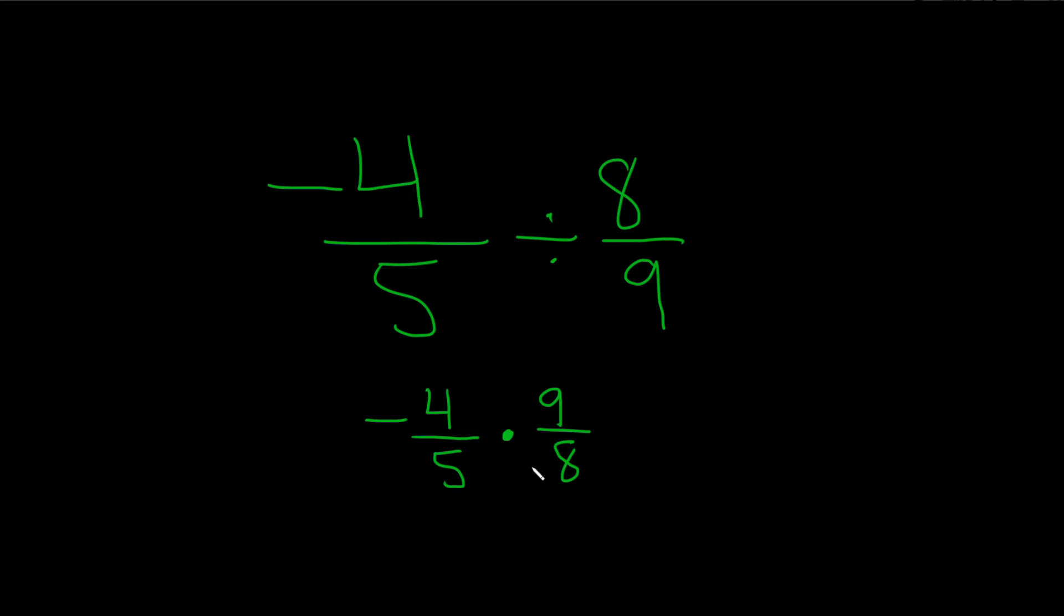So for example, the 4 and the 8, that's where my eye is drawn, because 4 goes into 4 one time, so you put a line through it and you put a 1, and 4 goes into 8 two times, so you put a line through it and you put a 2.